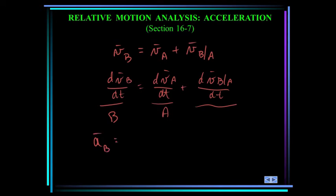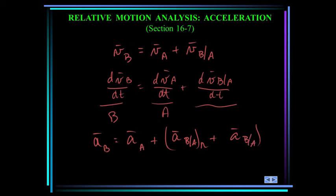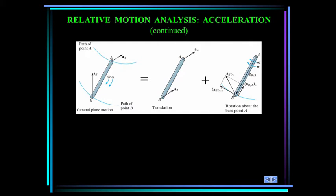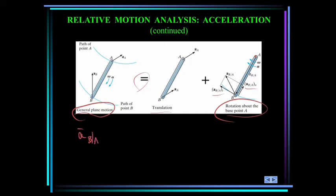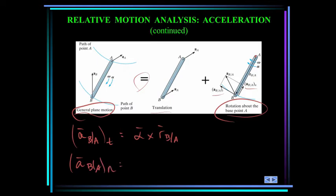We can write the acceleration of B equal to the acceleration of A, plus the acceleration of B with respect to A in the normal direction, plus acceleration of B with respect to A in the tangential direction. The relative acceleration component of B with respect to A in the tangential direction is equal to alpha cross R of B with respect to A, and the component in the normal direction is equal to minus omega squared times R of B with respect to A.